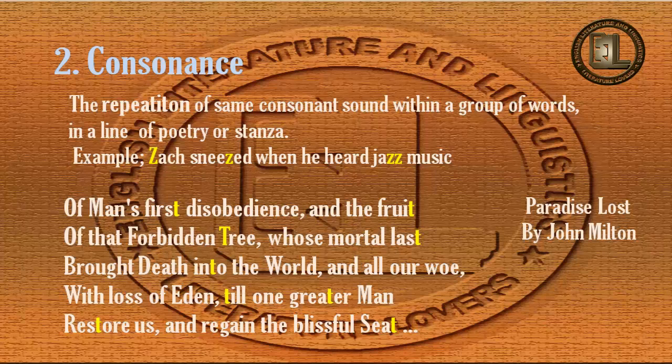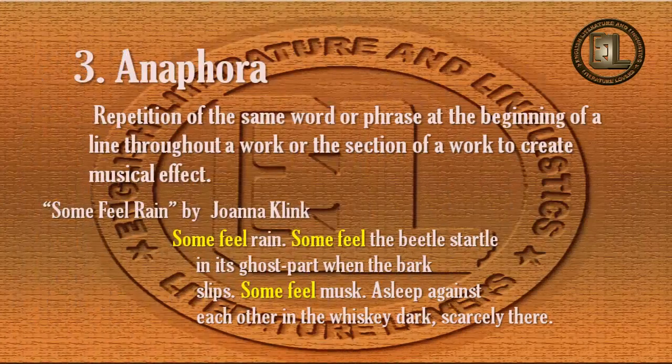The difference between alliteration and consonance is that in alliteration the consonant sound occurs at the beginning of a word, whereas in consonance the consonant sound can occur anywhere in the word — maybe at the beginning or in the middle. The third term is anaphora. What is anaphora? It is the repetition of the same word or phrase at the beginning of a line throughout a work or a section of a work to create a musical effect.